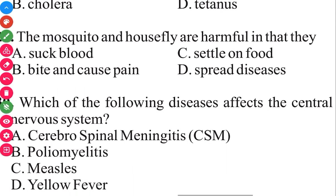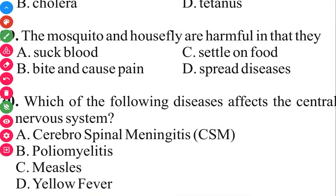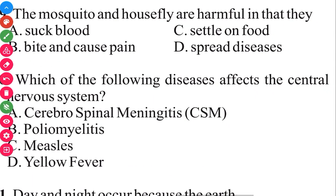Question 30. Which of the following diseases affects the central nervous system? Two of the following diseases affect the central nervous system. So we have cerebrospinal meningitis, poliomyelitis, measles, and yellow fever. The answer in 3, 2, 1 is poliomyelitis.